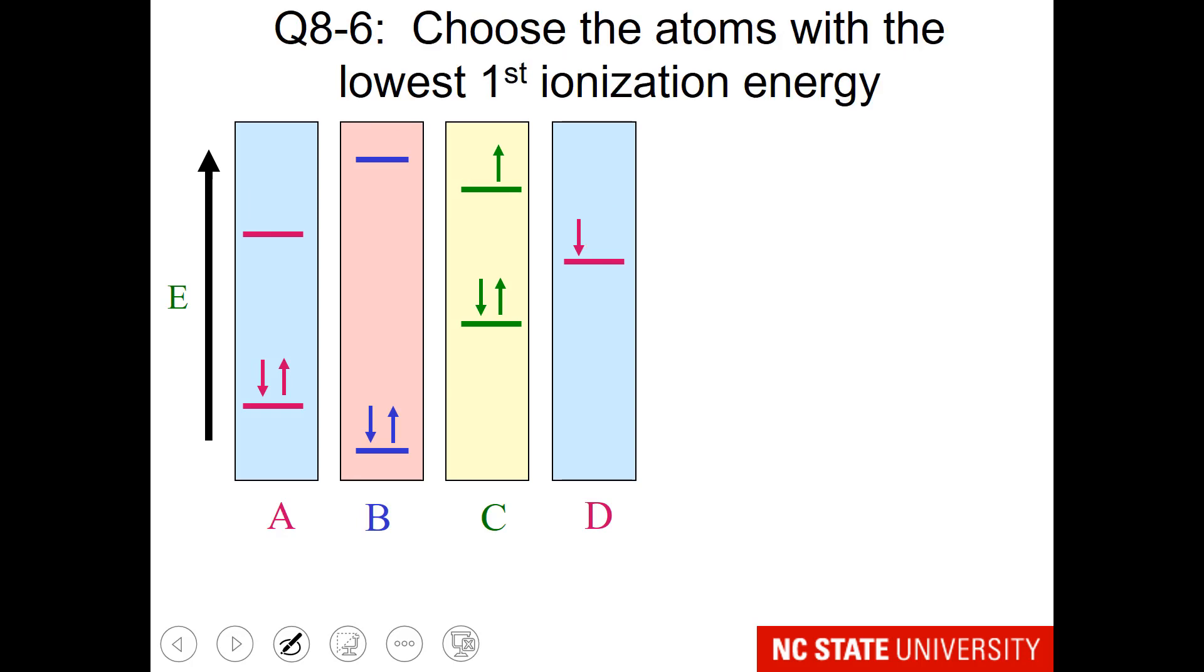This next question asks, choose the atoms with the lowest first ionization energy. This time, one is thinking about removing an electron. So we will circle here, here, here, and here. And of course, we are thinking about removing them to the ceiling. So which one would have the lowest ionization energy?